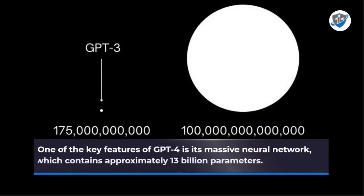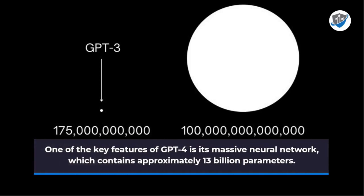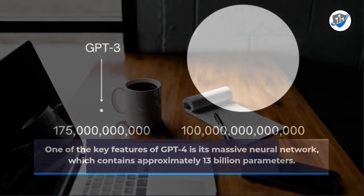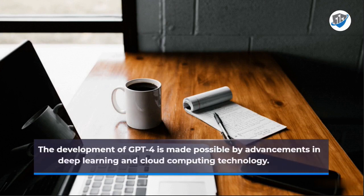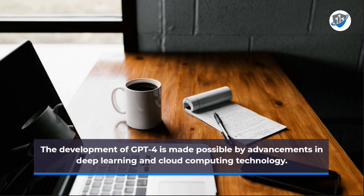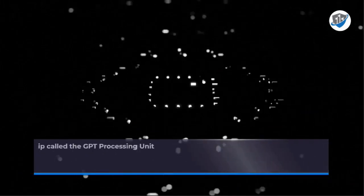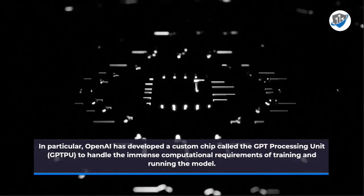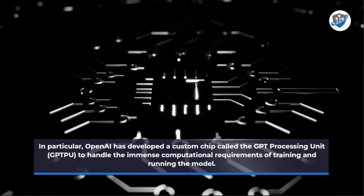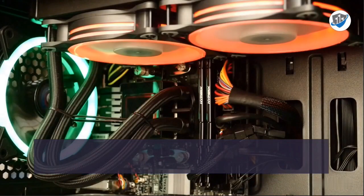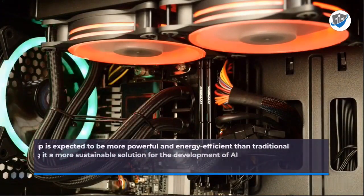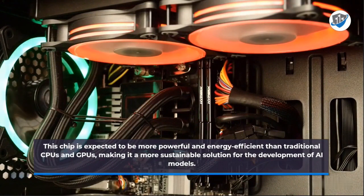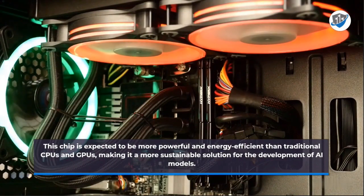One of the key features of GPT-4 is its massive neural network, which contains approximately 13 billion parameters. The development of GPT-4 is made possible by advancements in deep learning and cloud computing technology. OpenAI has developed a custom chip called the GPT Processing Unit to handle the immense computational requirements, which is expected to be more powerful and energy efficient than traditional CPUs and GPUs, making it a more sustainable solution for the development of AI models.